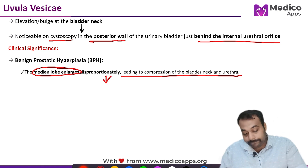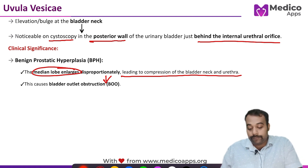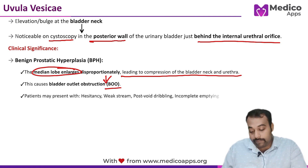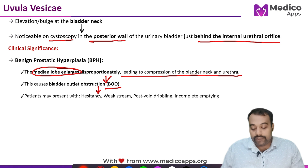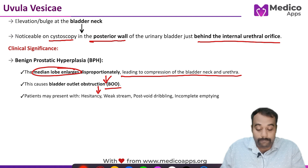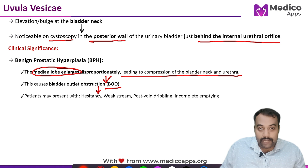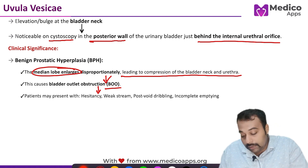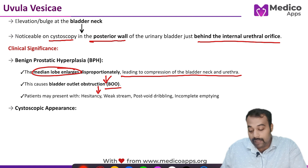As a result of this compression, it leads to formation of bladder outlet obstruction. That's why the patient with BPH typically presents with hesitancy, weak stream, post-void dribbling, or incomplete emptying, leading to significant post-void residual urine.